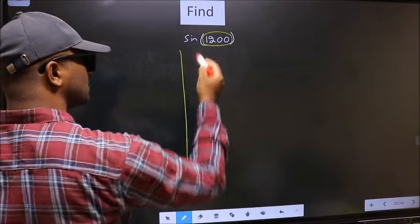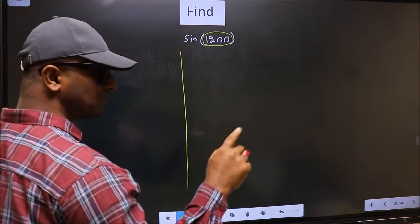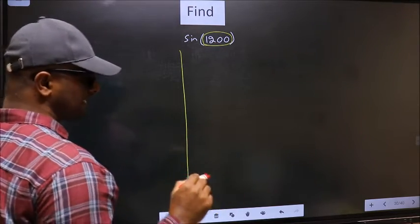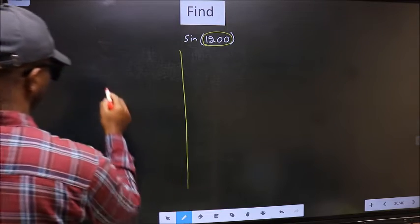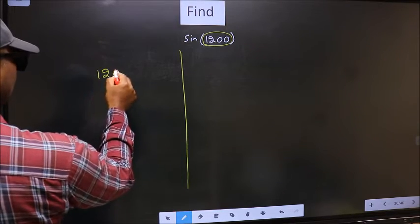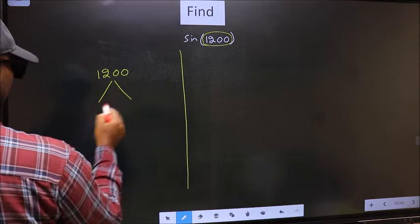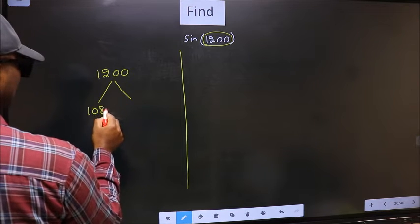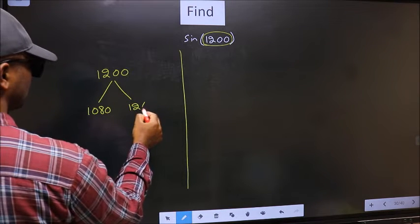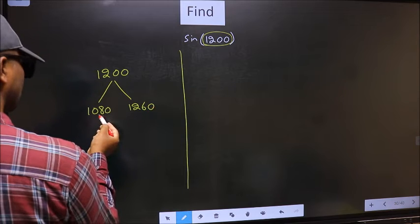1200° lies between which two multiples of 180°. What I mean is, 1200° lies between 1080° and 1260°.